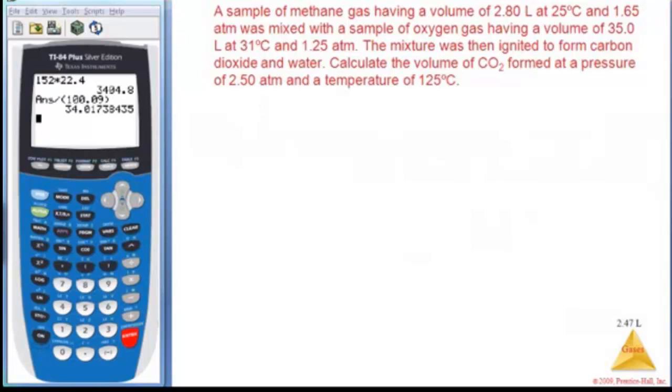Alright, sample of methane gas having a volume of 2.80 liters at 25 C and 1.65 atmospheres was mixed with a sample of oxygen having a volume of 35 liters at 31 C and 1.25 atmospheres. Mixture was ignited to form CO2 and water. Calculate the volume of CO2 formed at the pressure of 2.5 atmospheres and temperature of 125 C. Okay, so this is a combined stoic and PV=nRT problem, and it's limiting reactant, it looks like.